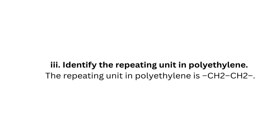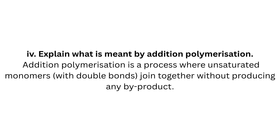Question 3: Identify the repeating unit in polyethylene. The repeating unit in polyethylene is CH₂CH₂. Question 4: Explain what is meant by addition polymerization. Addition polymerization is a process where unsaturated monomers with double bonds join together without producing any byproduct.